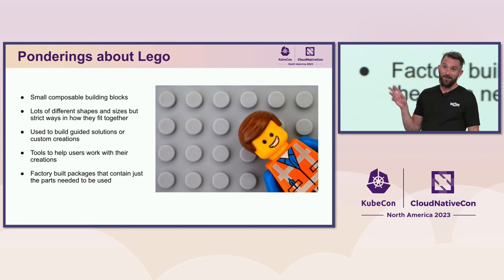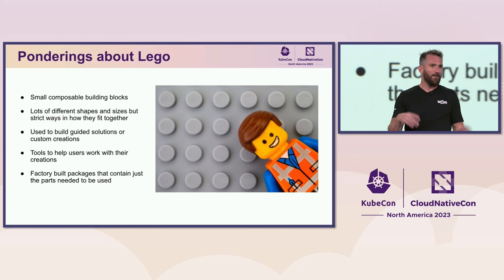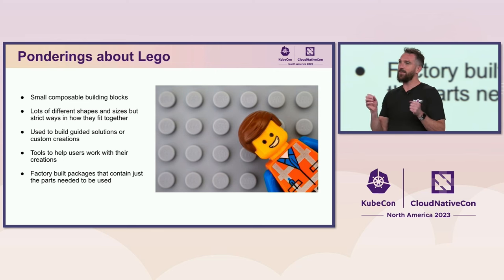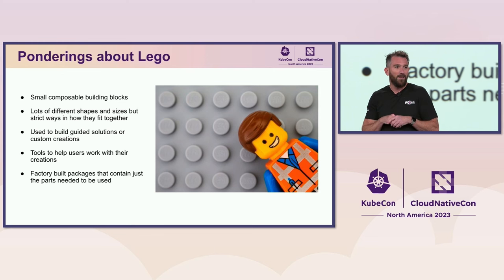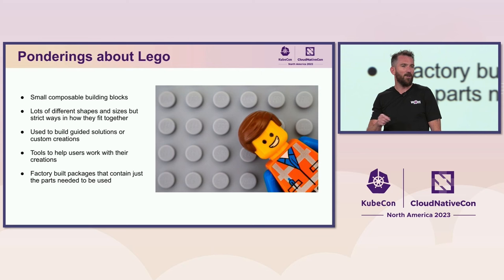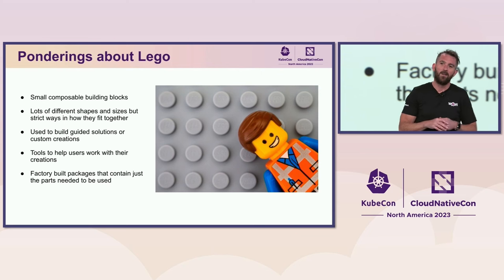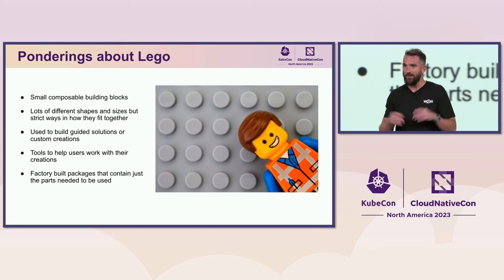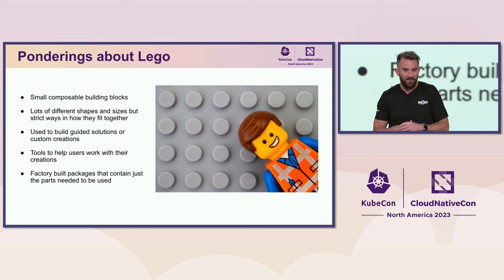So in my head, whilst I was pondering, I was breaking it down. I love Lego because it's all these small composable blocks that you can build together. It's many different shapes and sizes, but there's always a contract for how they all fit together. You can take instructions from the object you're trying to build and use those instructions to build it, or you can get creative with all those building blocks and build your own designs.